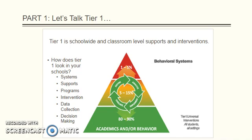Let's talk Tier 1. Tier 1 is school-wide and classroom-level supports and interventions — what the school offers for all students consistently. Every student in the school will receive Tier 1 interventions. Tier 1 includes the following: systems, supports, programs, intervention, data collection, and decision-making throughout the school and classroom.